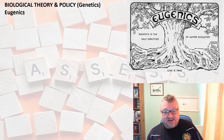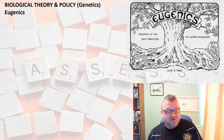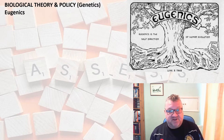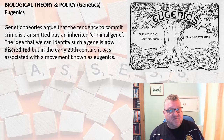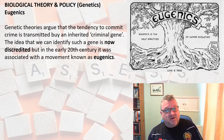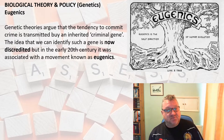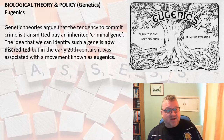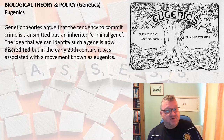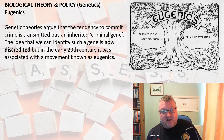Eugenics is linked to genetic theories — we've looked at Jacobs' XYY, twin and adoption studies. In general, this is influenced by the idea that the tendency to crime is in some way transmitted through our genes.